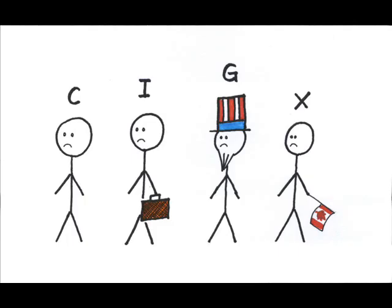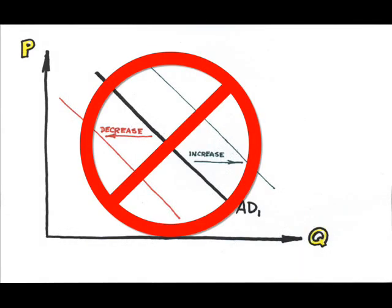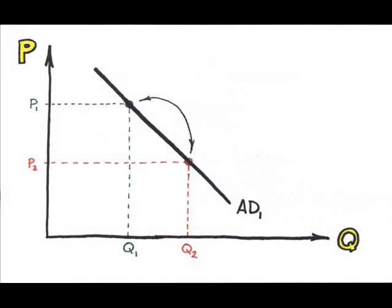Just like demand for a single product, a change in the price level will not shift aggregate demand, but only cause a movement along it. Is there anything that can shift aggregate demand? Sure. At a given price level, anything that changes total expenditures will change the overall aggregate demand.